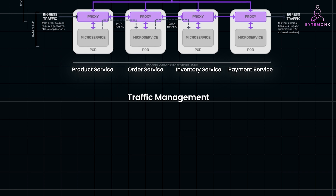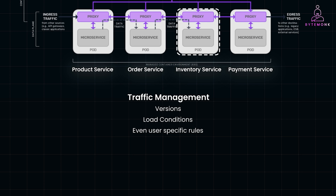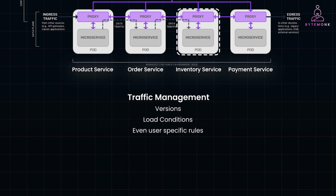One of the most powerful aspects of service mesh is its ability to manage traffic routing between services. You can route traffic based on versions, load conditions, or even user-specific rules. For instance, if you are rolling out a new version of your inventory service, you can set up canary deployments to send only 10% of the traffic to the new version, and if everything works fine, you can gradually increase that number.